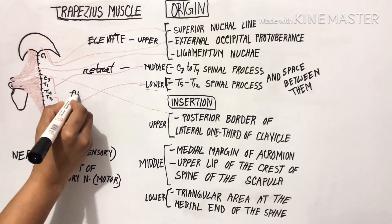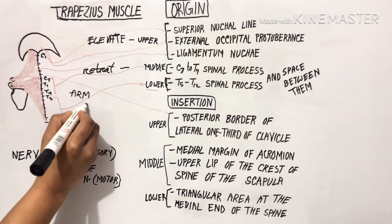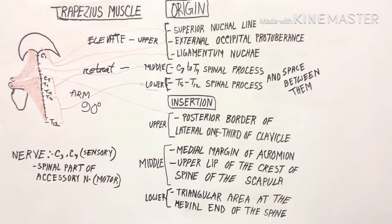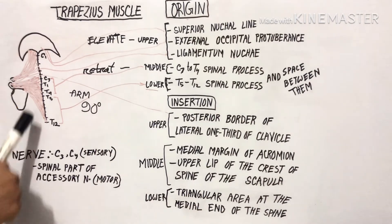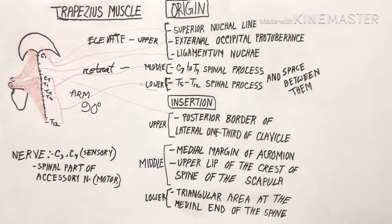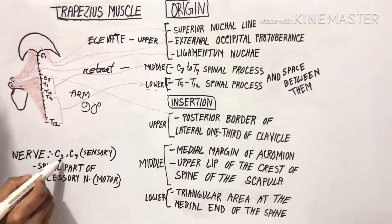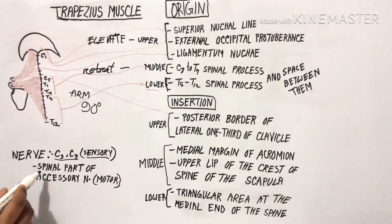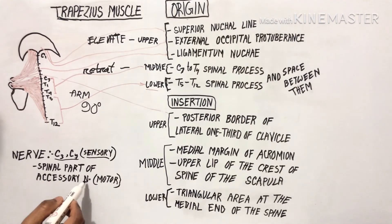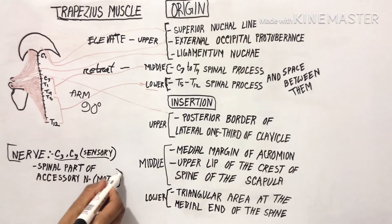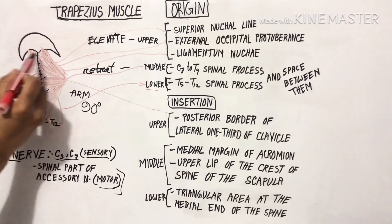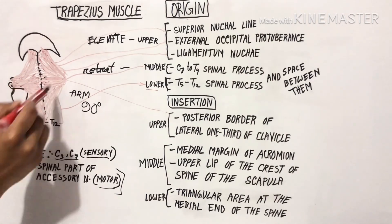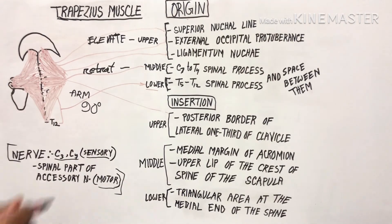The nerve supply: the trapezius muscle is supplied by two nerve branches — branches from C3 and C4 for sensory function, and the spinal part of the accessory nerve for motor function. This is how our trapezius muscle looks. That's all about the trapezius muscle.